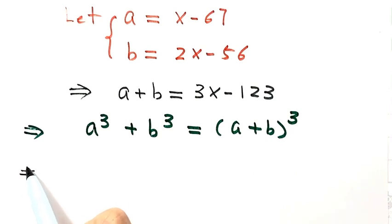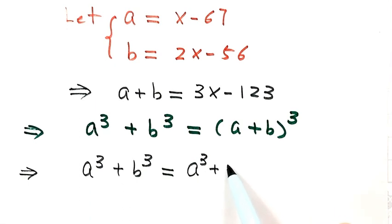So next, let's expand the right-hand side by using the binomial formula. That's a to the third plus 3a squared b plus 3ab squared plus b to the third.